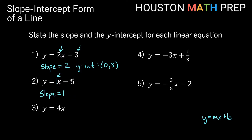And don't forget to include the minus sign — that's like having a negative 5 for our b. So we cross the y-axis at negative 5, and our y-intercept is the point (0, -5).